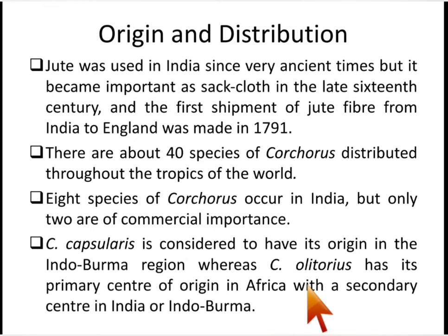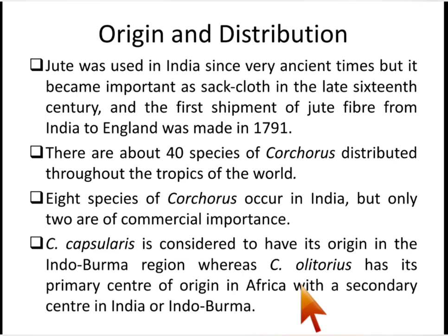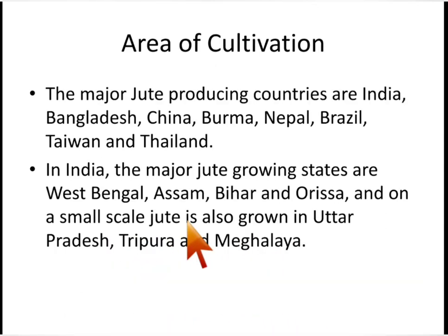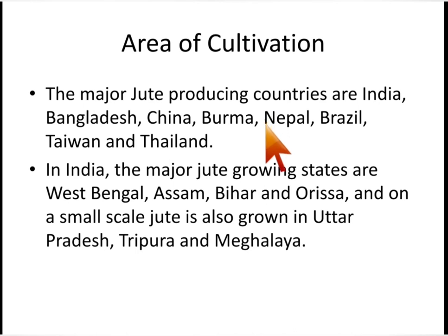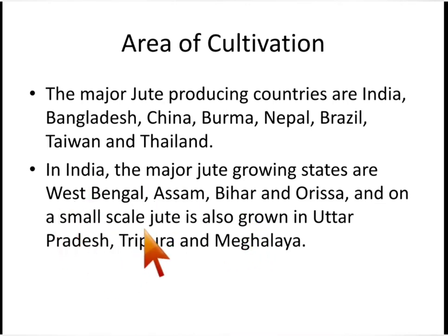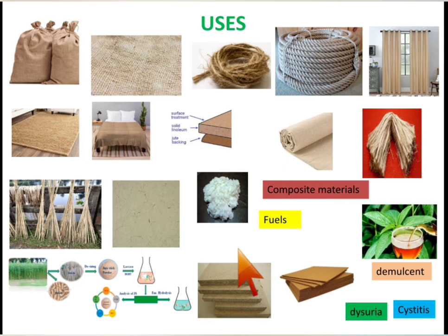The fiber is obtained from the stems of two species of Corchorus: capsularis and olitorius. The major jute-producing countries are India, Bangladesh, China, Burma, Nepal, Brazil, Taiwan and Thailand. In India, the major jute-growing states are West Bengal, Assam, Bihar and Orissa, and it is also cultivated in Uttar Pradesh, Tripura and Meghalaya but on a small scale.